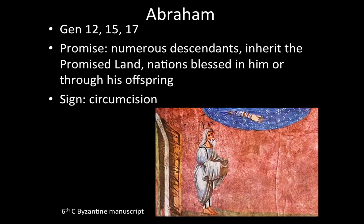Next, Abraham. The covenant is outlined specifically in chapters 12, 15, and 17 of Genesis. The promise God gives to Abraham — given when he's still Avram, before the name change signaling a complete change of vocation — includes that he will have numerous descendants, as many as the stars in the sky or the sand in the sea, that his descendants will inherit the promised land, and that nations will be blessed through Abraham or his offspring. So a threefold promise is given by God to Abraham. The sign of that promise is circumcision — that new belongingness shown by the physical mark of circumcision, belonging to God in a special way.